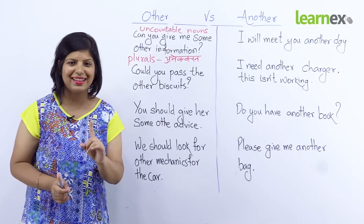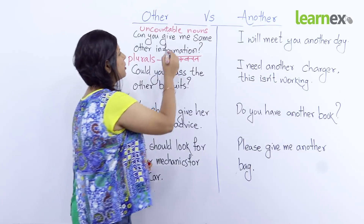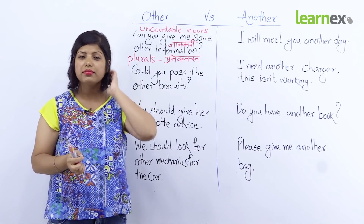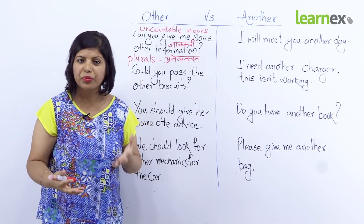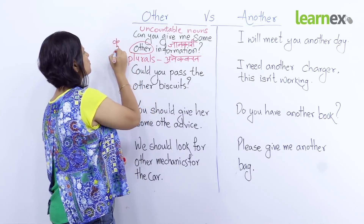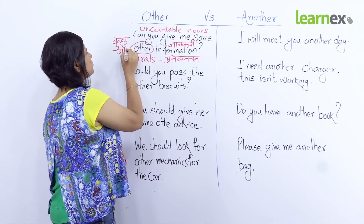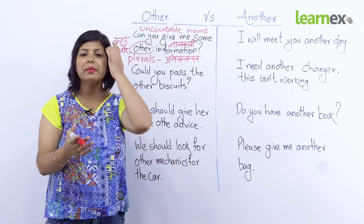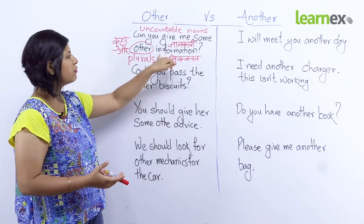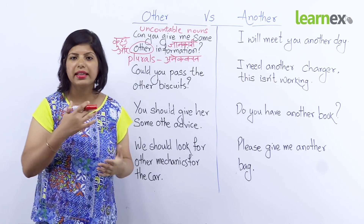Chaliye, iska sabse pehla example deikh lete hain: 'Can you give me some other information?' — Ji haan. 'Information' yaani ki jaankari. Toh kya hum jaankari ko gin sakte hain? Nahi — hum sirf jaan sakte hain ki woh information kya hai, woh uncountable hai. So 'Can you give me some other information?' — 'other' matlab kuch aur information. Yehaan pe aap yeh nahi keh sakte: 'Can you give me some another information?' — yeh grammatically bahut galat hai.